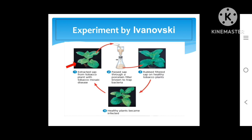This was the experiment done by Ivanowski. He first extracted sap from a tobacco plant with tobacco mosaic disease and passed this sap through a porcelain filter known to trap bacteria. The filtrate was then put into a healthy tobacco plant, and he found that the healthy plant became infected. The conclusion is that the infectious agent is much smaller than bacteria, since the filtrate remained infectious and transferred the disease from the infected plant to the healthy plant.